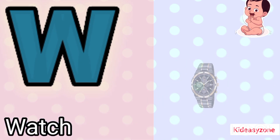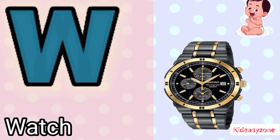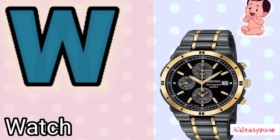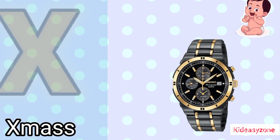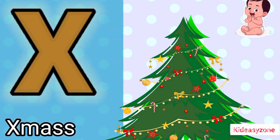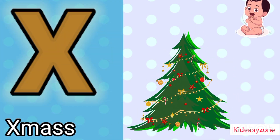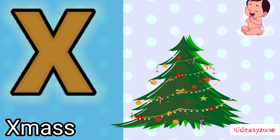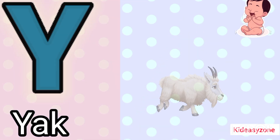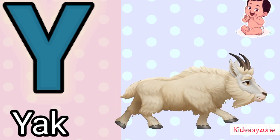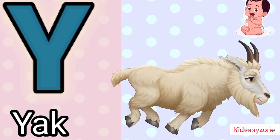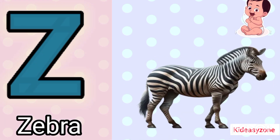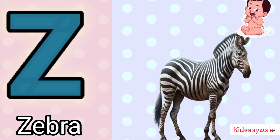W is for watch. X is for x mystery. Y is for vyaak. Z is for zebra.